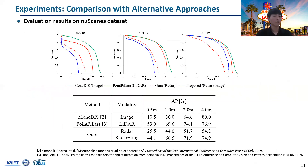We evaluated the proposed method on the nuScenes dataset, because it is the only dataset that provides radar point cloud data with 3D annotation. For the evaluation, we use average precision metric at 0.5, 1, and 2 meter thresholds, as nuScenes uses a distance threshold instead of intersection over union, which is commonly used in the KITTI dataset. As a result, the proposed method achieves comparable performance to LiDAR by using inexpensive camera and radar sensors. The following slides explain how and why fusing radar and camera can significantly improve recall and precision over the radar-alone method.